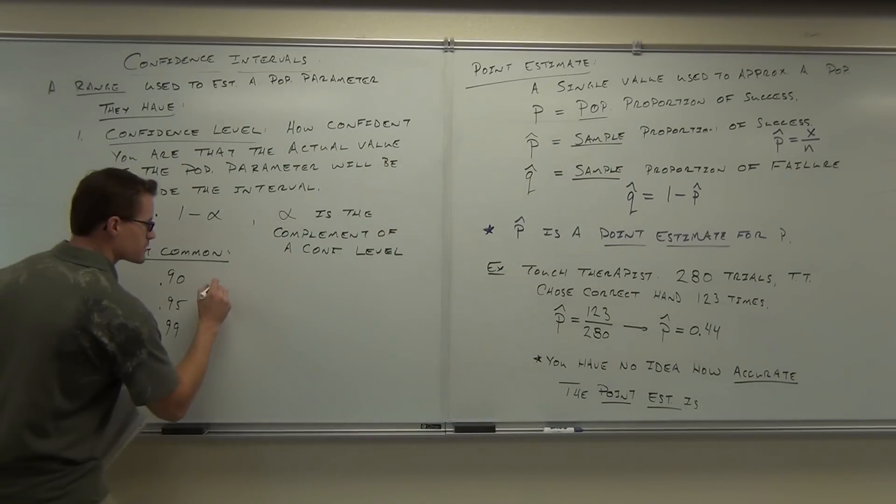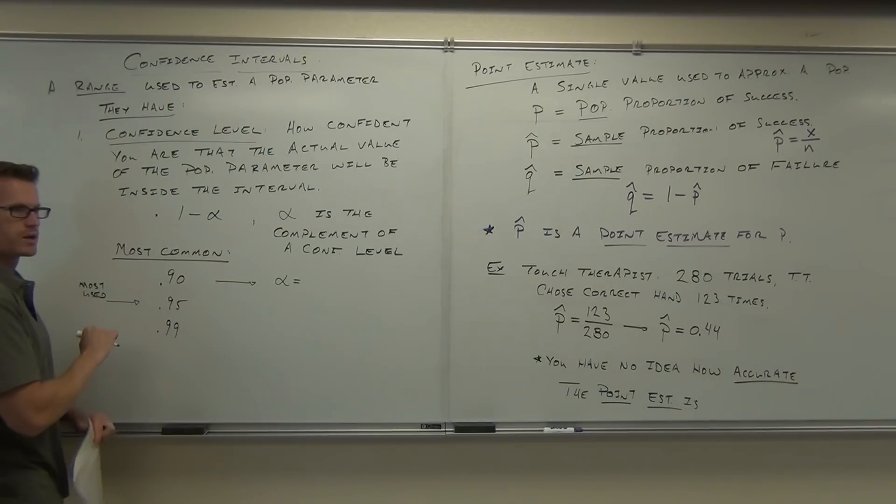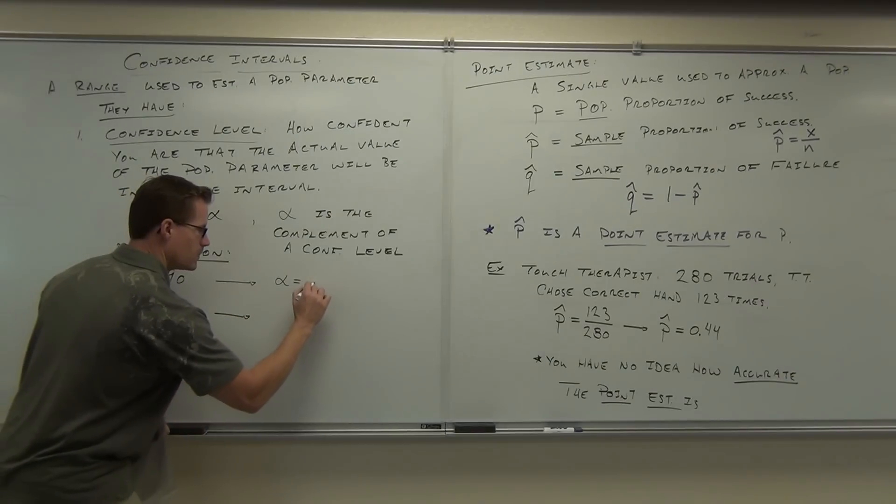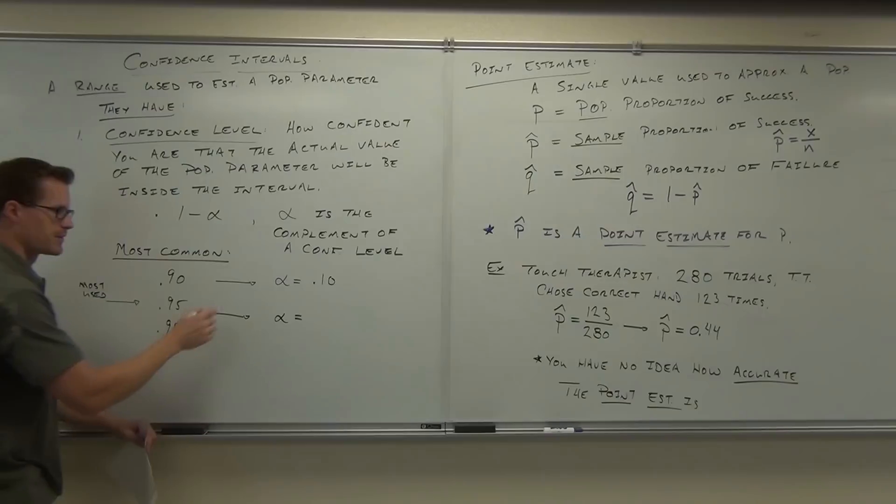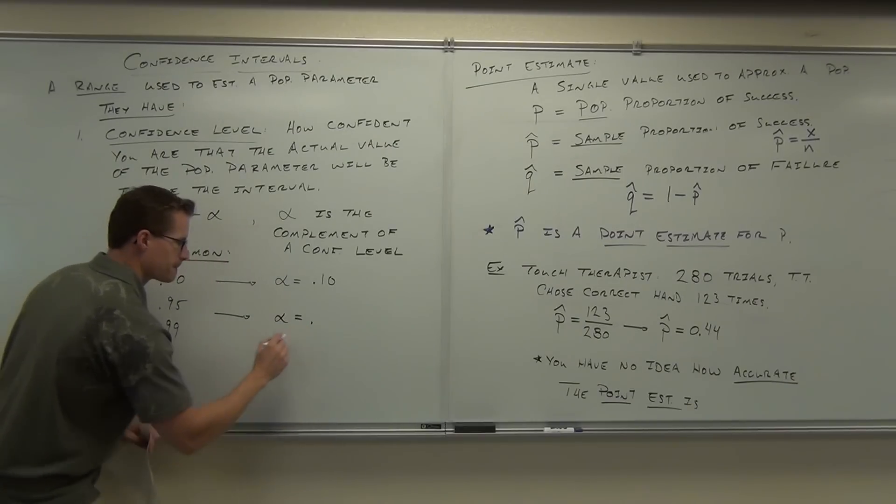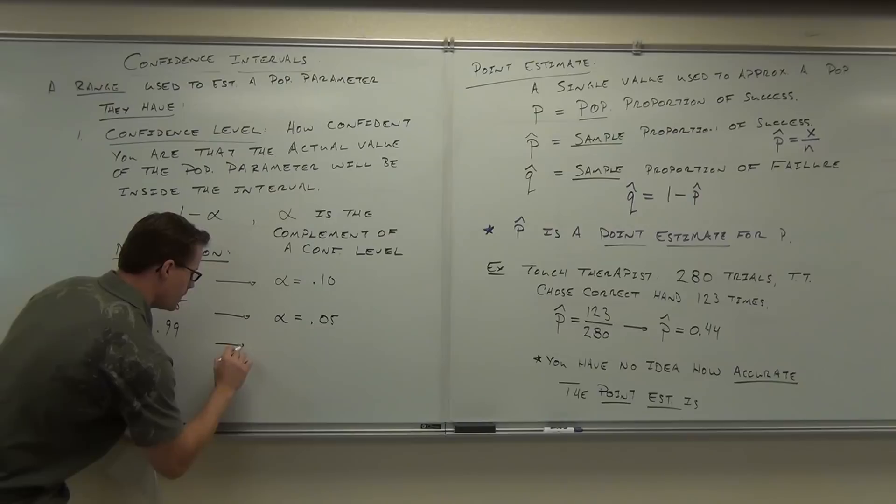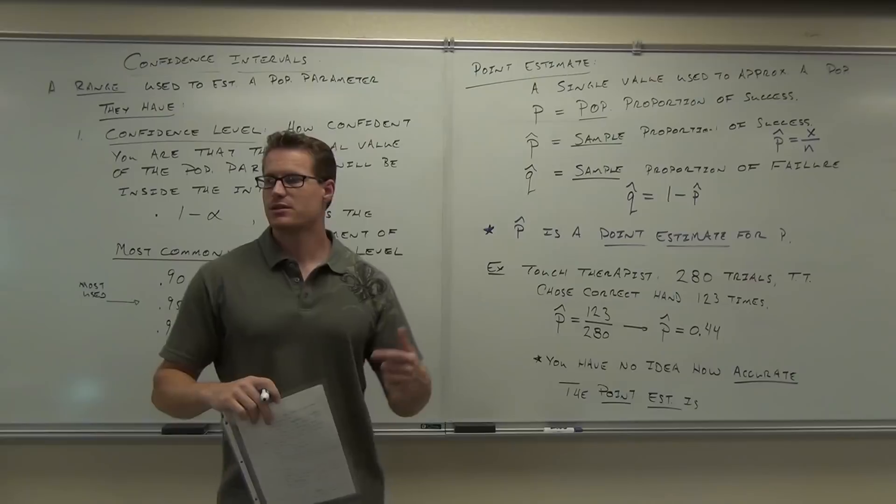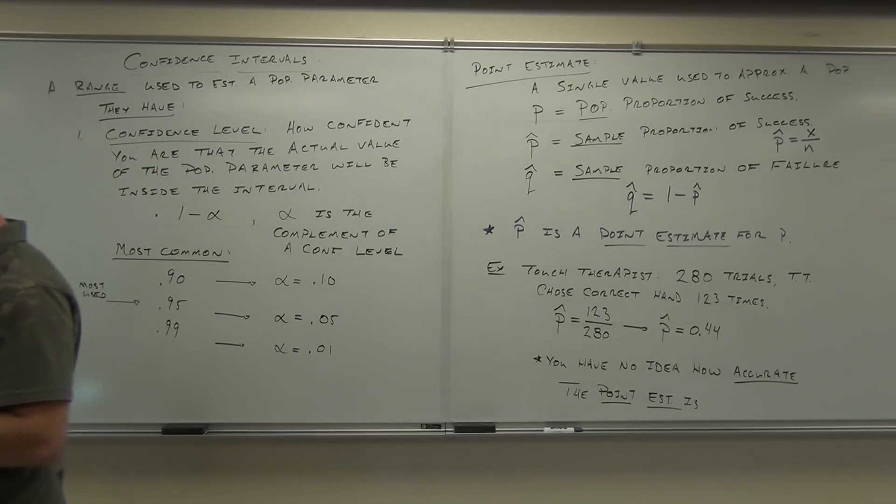Now, could you figure out the alphas from this stuff? How much is the alpha from 0.90? Good. Magic? Not magic. How is she getting 0.1? How about this one? 0.05. Not 0.5, right? That'd be 50%. And this one? 0.01. That's right. Those are the alphas that's associated with each of our most common confidence intervals. Our confidence levels.